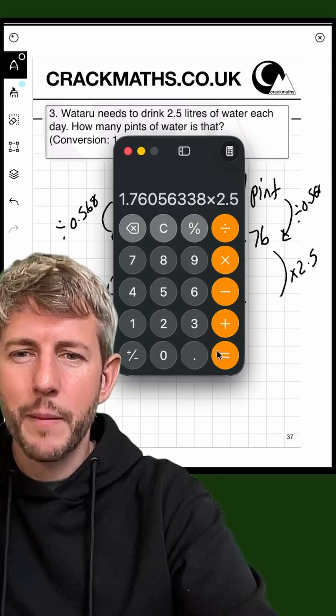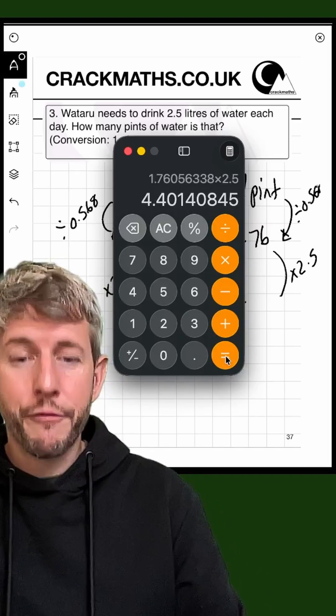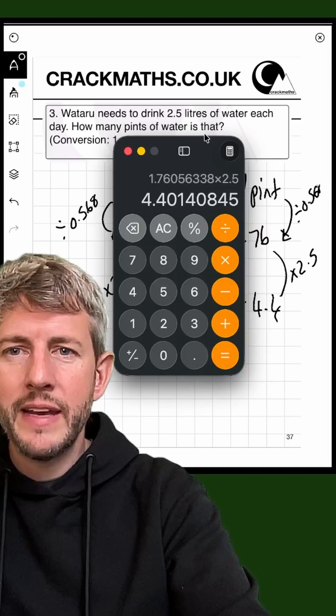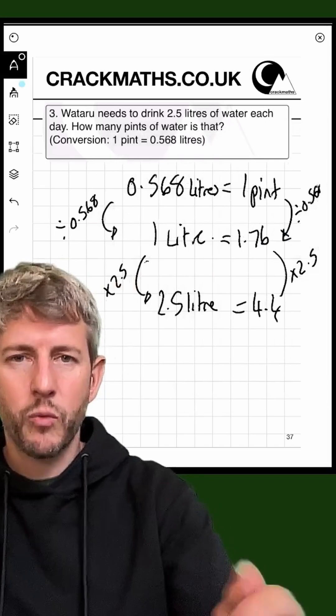So here we go. Multiply that by 2.5 and that equals 4.4. I'm going to leave it like that because that's accurate to one decimal place.